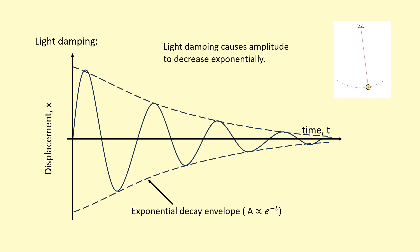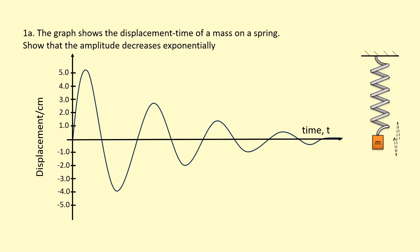This dotted line is called the exponential decay envelope, and it's where the amplitude is proportional to e to the power minus t, which is the exponential decay function. The graph shows the displacement graph of a mass on a spring where the amplitude decreases exponentially.